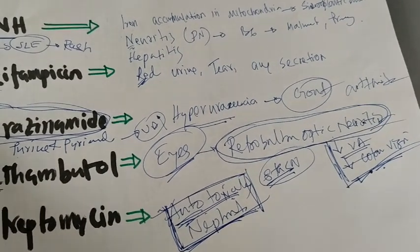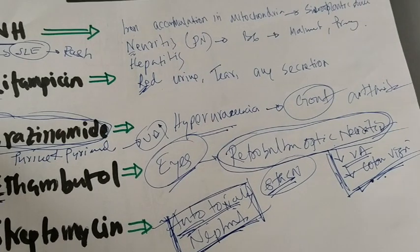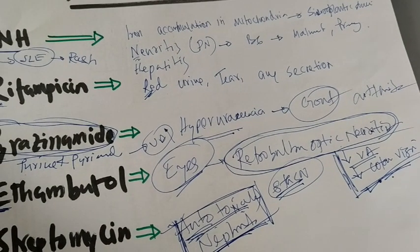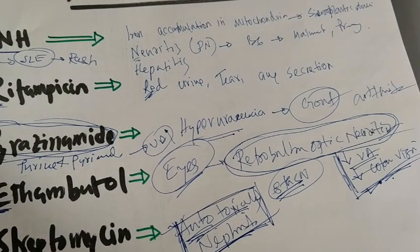So this covers all the side effects of anti-tubercular drugs: Isoniazid, Rifampicin, Pyrazinamide, Ethambutol, and Streptomycin. Thank you very much.